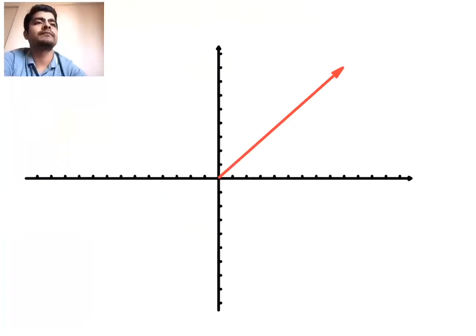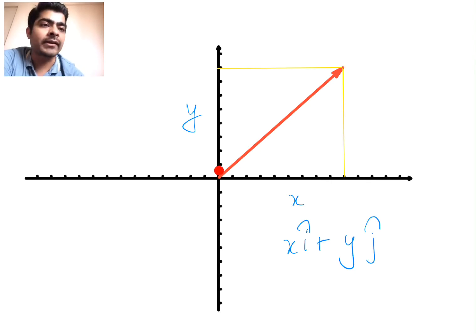So let's take a general vector whose x component will be x and its y component will be y. I can write down this vector as x i cap plus y j cap. Now in this vector, this length will be equal to x and this height will be equal to y.